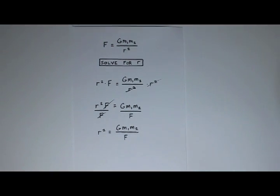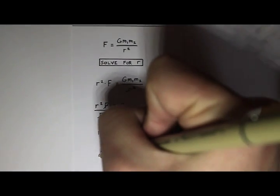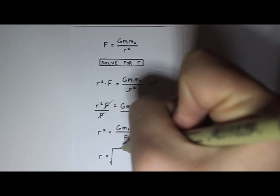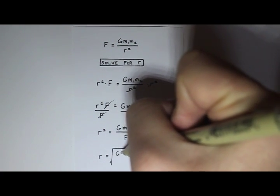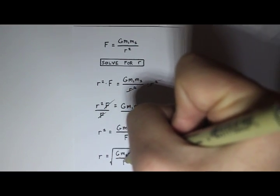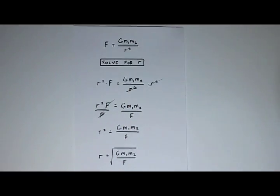And last step, I want to reverse that square. The way to reverse the square is to square root. So I'm going to square root both sides. The square root of r squared is just r. And this all gets put under a giant square root, g m1 m2 divided by f.